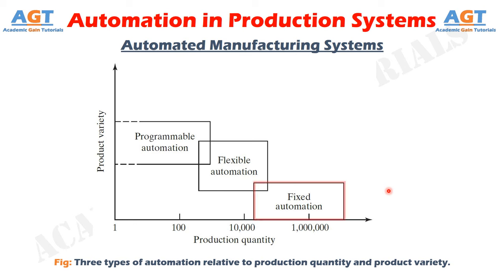Fixed automation is a system in which the sequence of processing or assembly operations is fixed by the equipment configuration. Each operation in the sequence is usually simple, involving perhaps a plain linear or rotational motion or an uncomplicated combination of the two, such as feeding a rotating spindle. It is the integration and coordination of many such operations in one piece of equipment that makes the system complex.